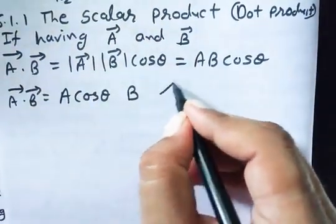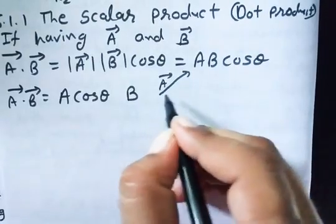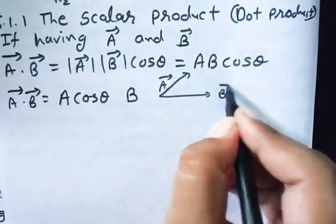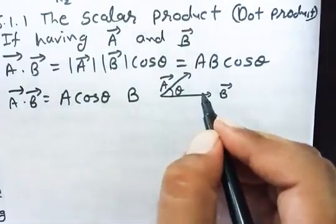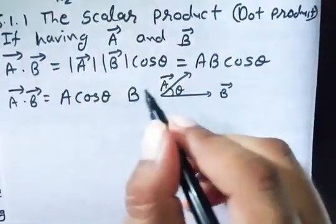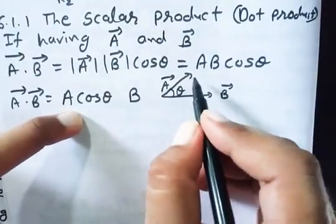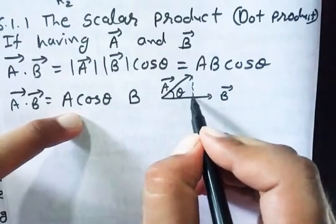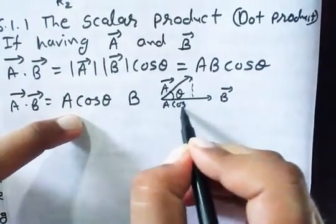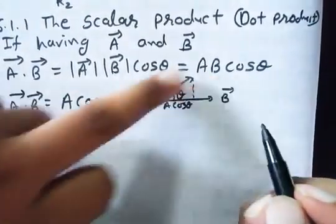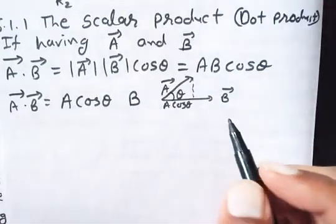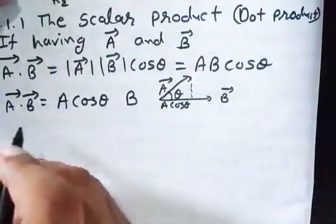If my vector is in this direction, my vector B is in this direction, and the angle between them is theta. Then the projection of A on B will be A cos theta. So this is the correct equation for this method.